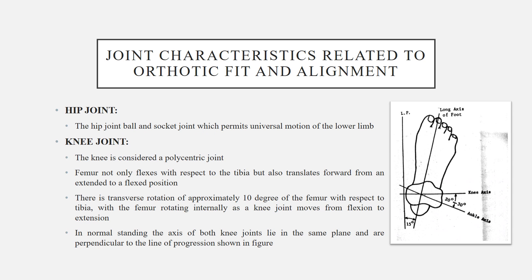Joint characteristics related to orthotic fit and alignment. The first joint is the hip joint. The hip joint is a ball and socket joint which permits universal motion of the lower limb, meaning the motions of the hip joint are three-dimensional in nature — providing flexion and extension in the sagittal plane, abduction and adduction in the frontal plane, and internal and external rotation in the transverse plane.